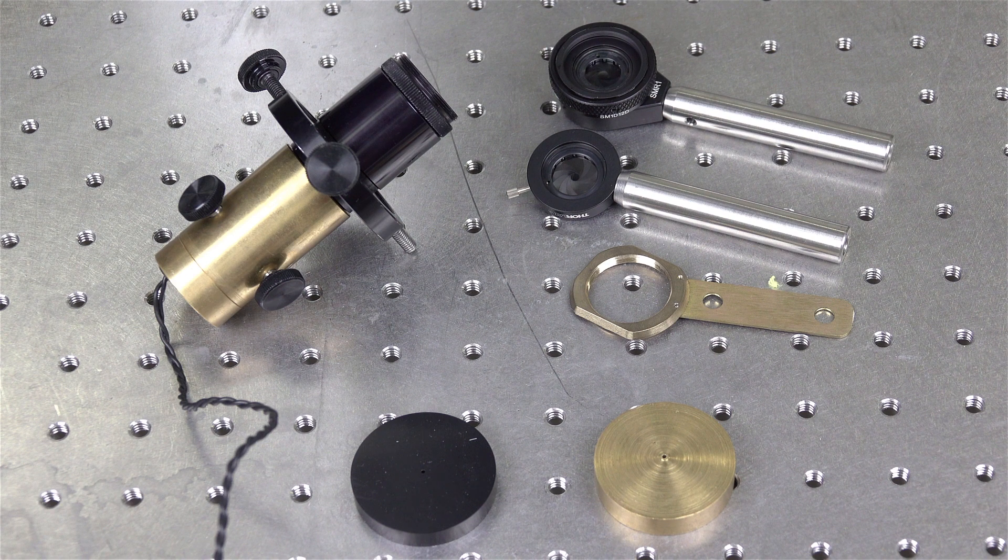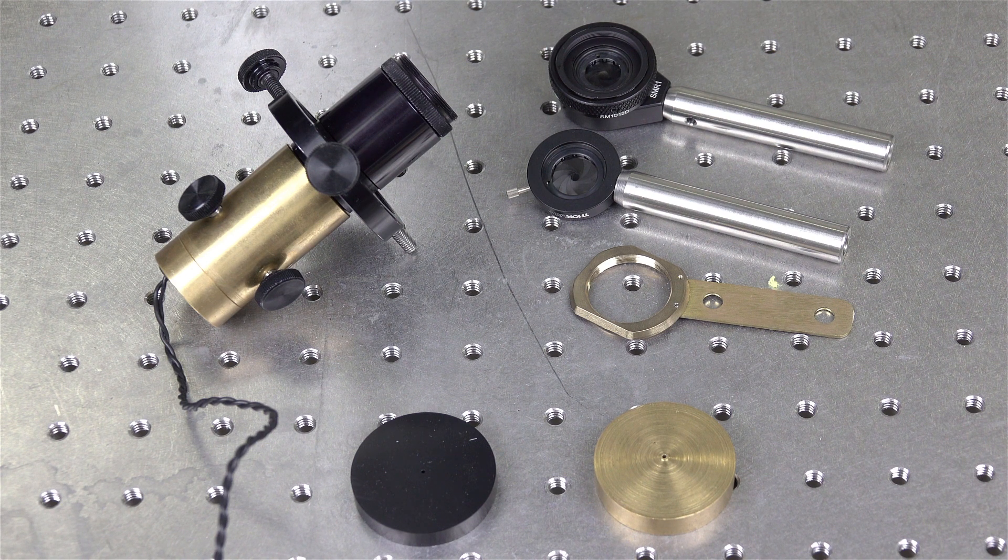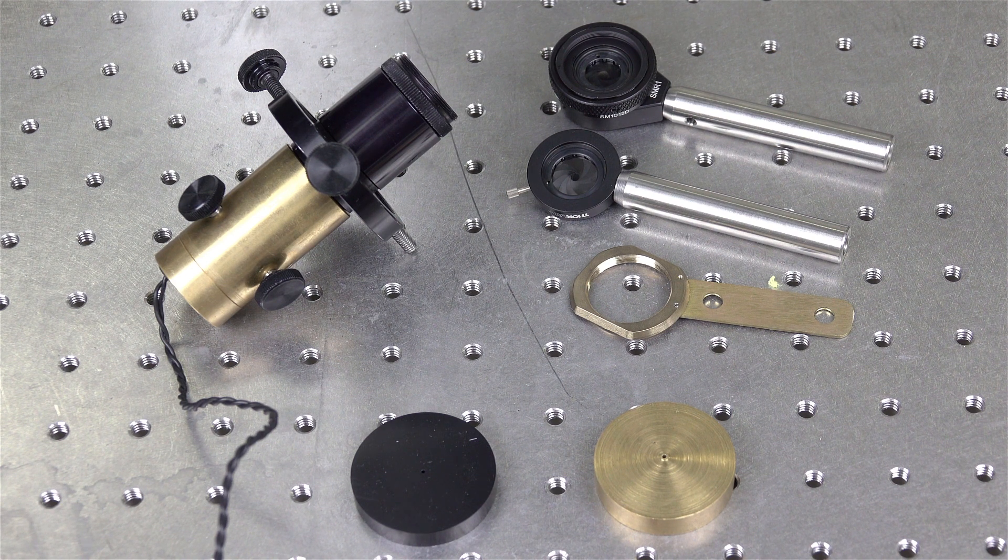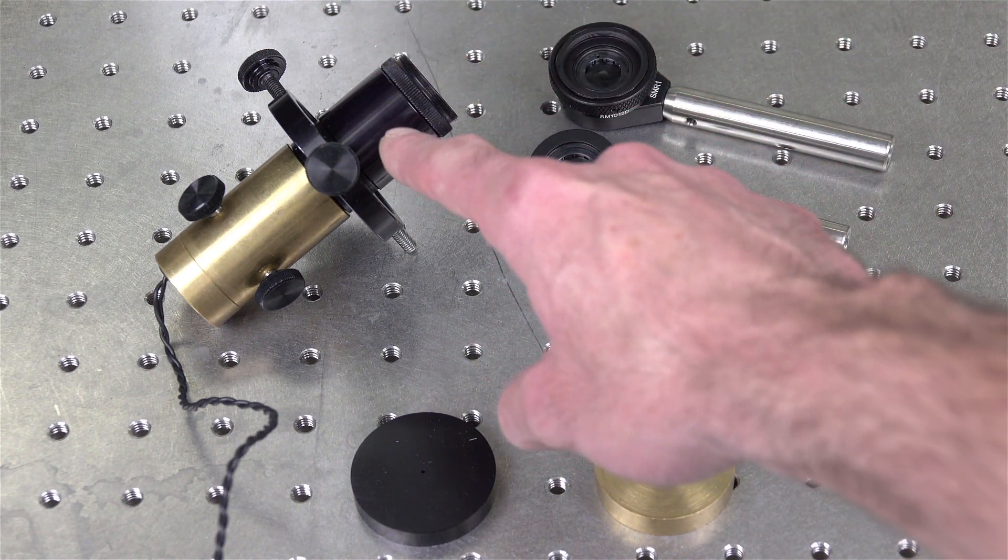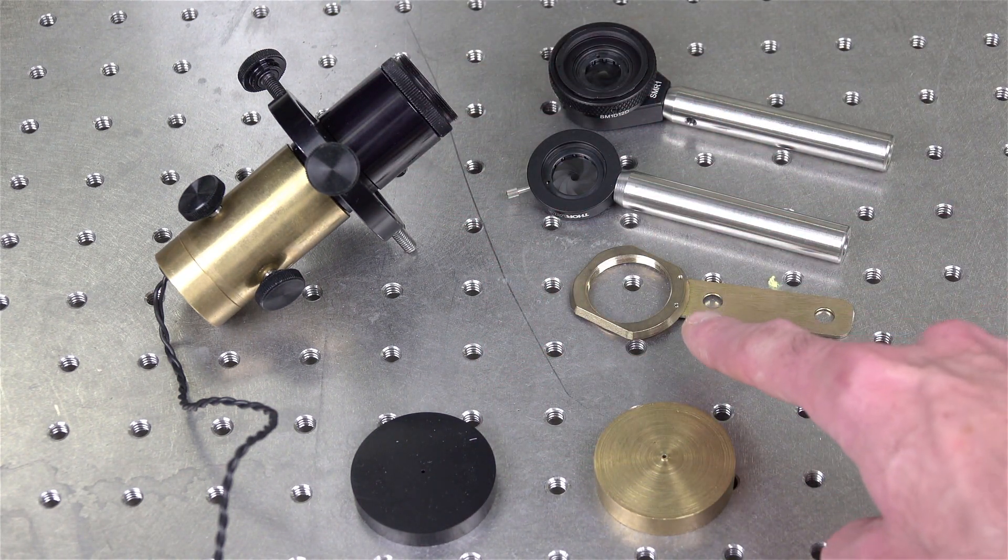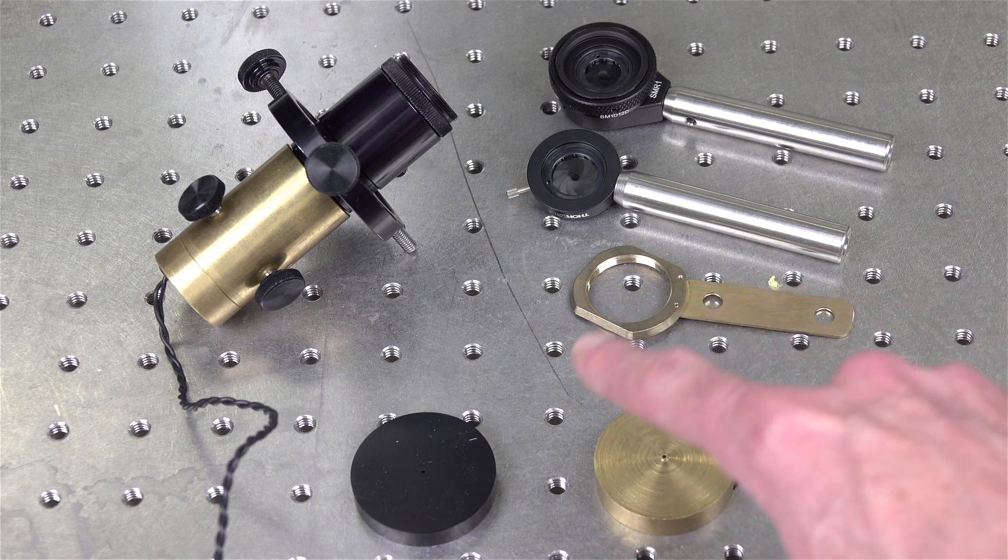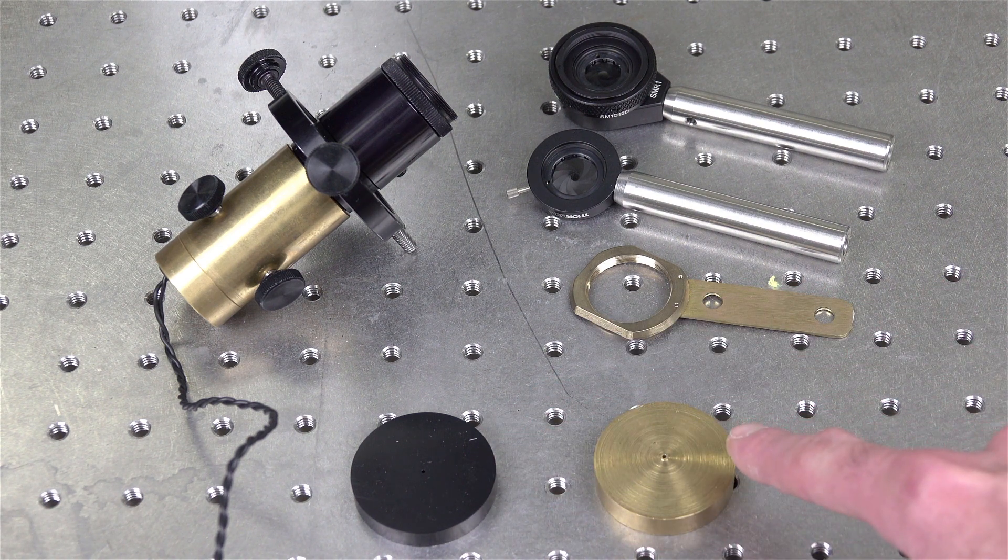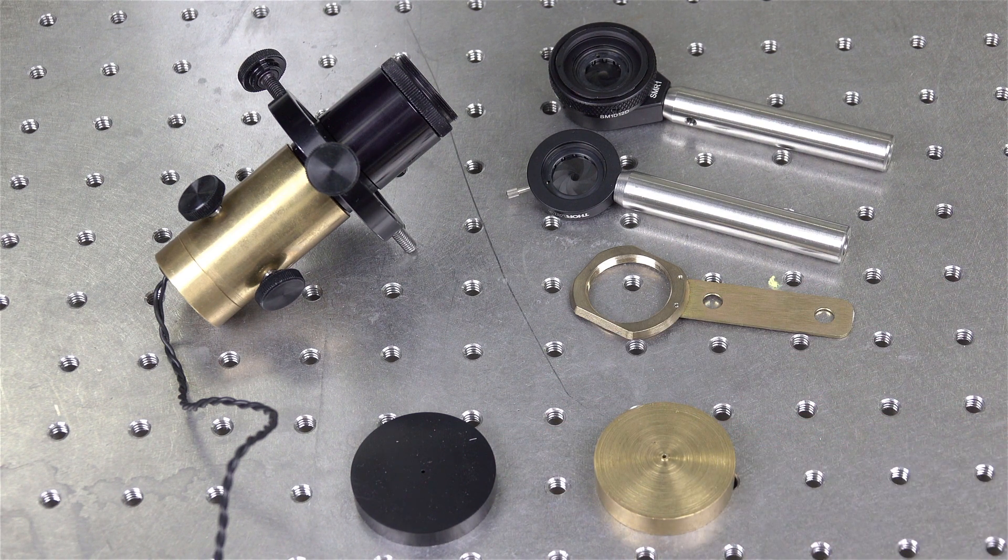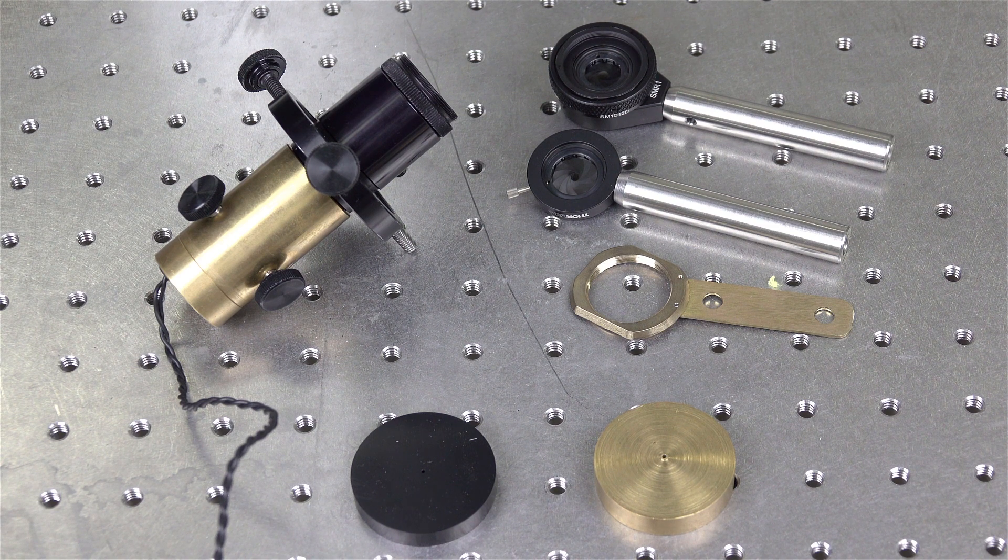For our Sutter movable objective microscope, we sell an alignment kit to assist you in aligning your microscope. This kit consists of an alignment laser that fits into the objective holder of the MOM, as well as a pinhole for the tube lens and a pinhole for the scan lens that will enable us to center the alignment beam through the microscope.